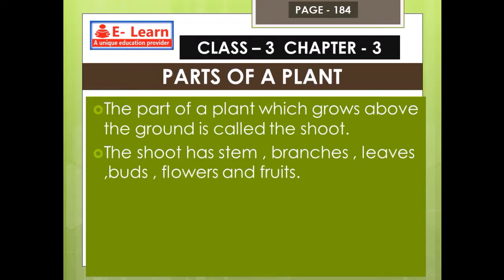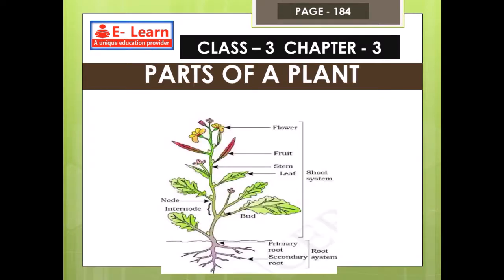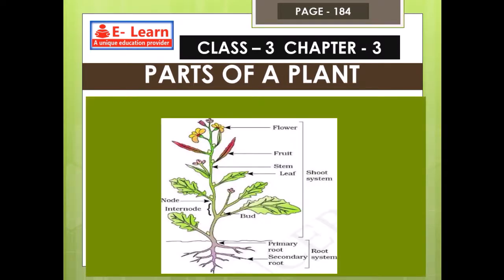The part which grows below the ground is called the root. If you can see the picture, below the ground we have the root system, which includes the primary root and secondary root. Above the ground is the shoot system.